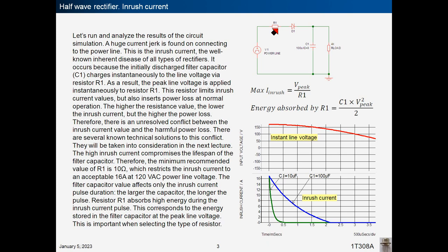The higher the resistance value, the lower the inrush current, but the higher the power loss. Therefore, there is an unresolved conflict between the inrush current value and the harmful power loss. There are several known technical solutions to this conflict, which will be taken into consideration in the next lecture. The minimum recommended value of R1 is 10 ohms, which restricts the inrush current to an acceptable 16 amps at 120 VAC power line voltage.